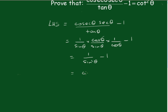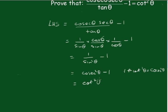Because these terms cancel, you get 1 over sin theta minus 1, and that is cot theta minus 1. Now using the fact that 1 plus cot squared theta equals cosec squared theta, we can see that cot squared theta equals cosec squared theta minus 1. So that's equal to cot squared theta, which equals the right hand side. Therefore, left hand side is equal to right hand side.